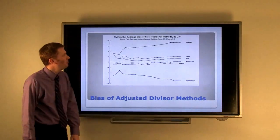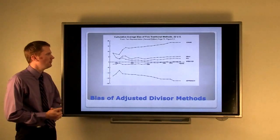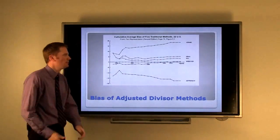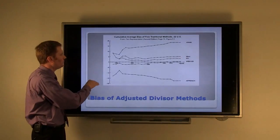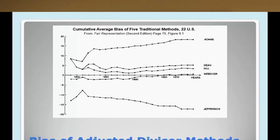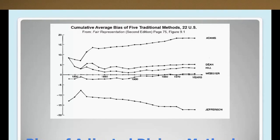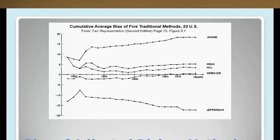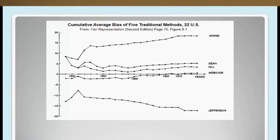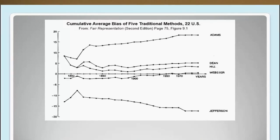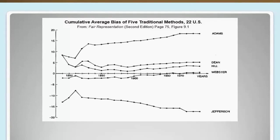A couple of mathematicians, Balinski and Young, did some research on all of these methods. They threw out Hamilton's method because of the paradoxes and added Dean's method, then looked at the bias that these different methods have. The further above zero is the cumulative percent bias towards smaller states, and the further below zero is the cumulative percent bias towards larger states. You can see that Jefferson's method has gotten more and more biased towards larger states as the size of our House of Representatives and the population of the country has gotten larger.